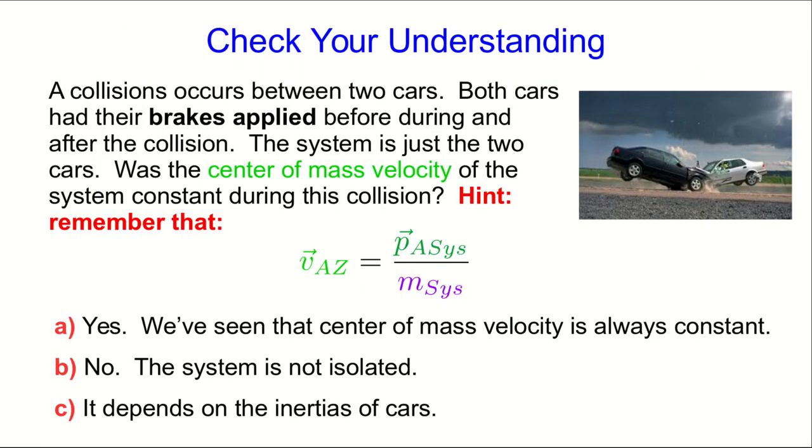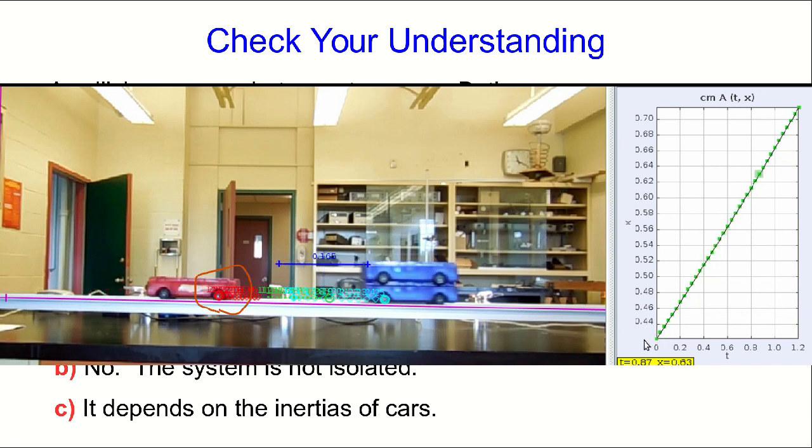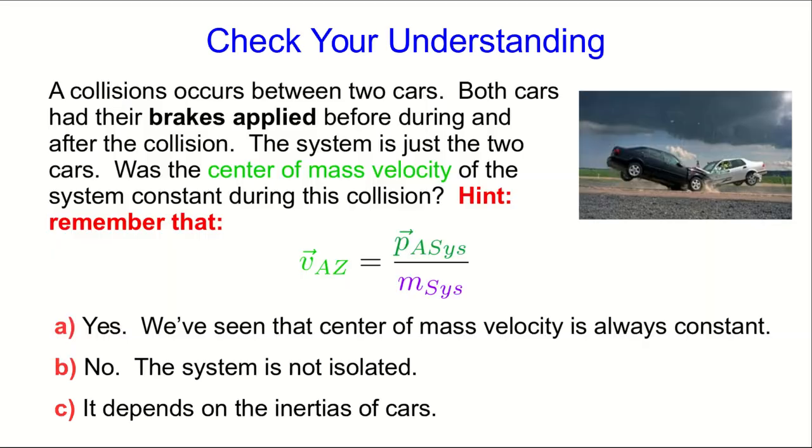Before returning to solve the problem at last that we're working on, I want you to stop and think about the meaning of this relationship that we just found, because it shows us a reason for something we've already seen. We've seen that the velocity of the center of mass, which we now know is also the velocity of the zero momentum frame, was constant in collisions. Well, is that always true? So let's think about a collision between two cars, and let's say both cars have their brakes applied throughout the collision. So is the center of mass velocity constant in this collision?